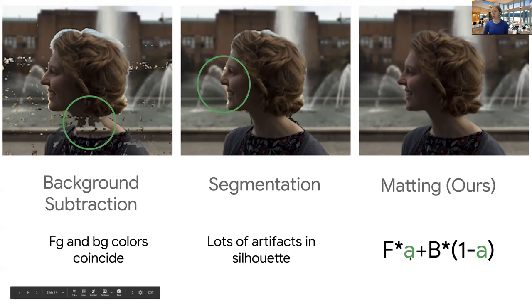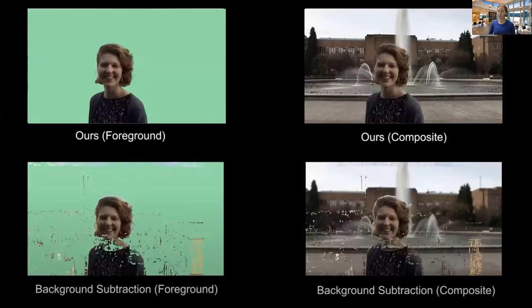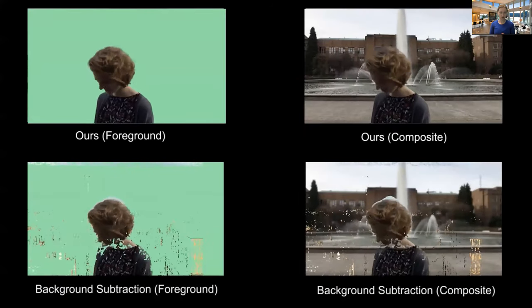Where alpha is the alpha map and foreground is the human. And these are the two that we would like to estimate because in the future, we would like to replace the background. And so let's understand that for a second. So when A is equal to zero, we get just background. When A is equal to one, we get just foreground. So that's the definition.